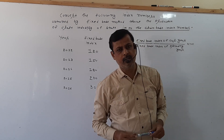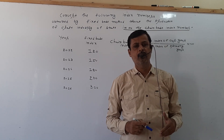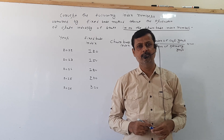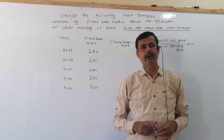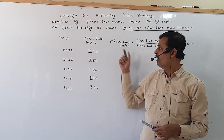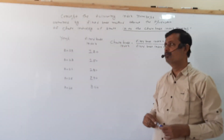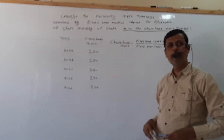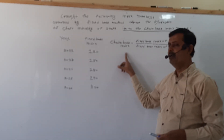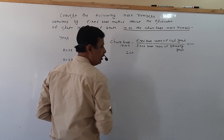Always remember one thing: whenever you convert fixed base into chain base, if the base year index is not given, at that time we will take the first year chain base index as 100. In this example, the base year is not mentioned, so the first year chain base index is taken as 100.